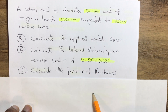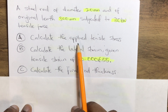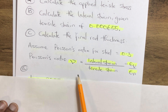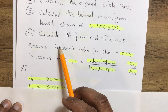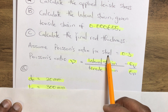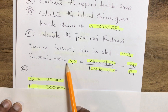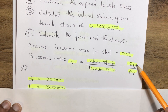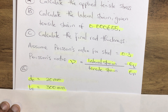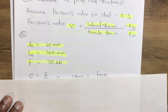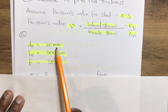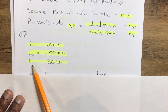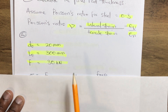We have very important parameters given. To find the applied tensile stress, we use the relevant formula, knowing that the Poisson's ratio of steel is 0.3. Poisson's ratio is lateral strain over tensile strain, which equals negative delta-v over delta-L. We have original diameter 20 mm, original length 300 mm, and tensile force of 30 kilo Newton.